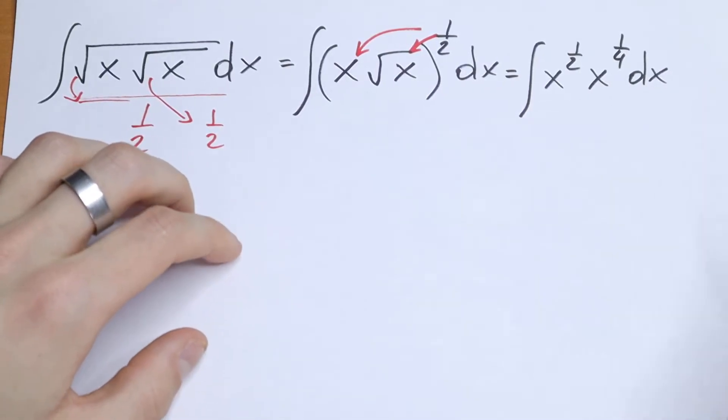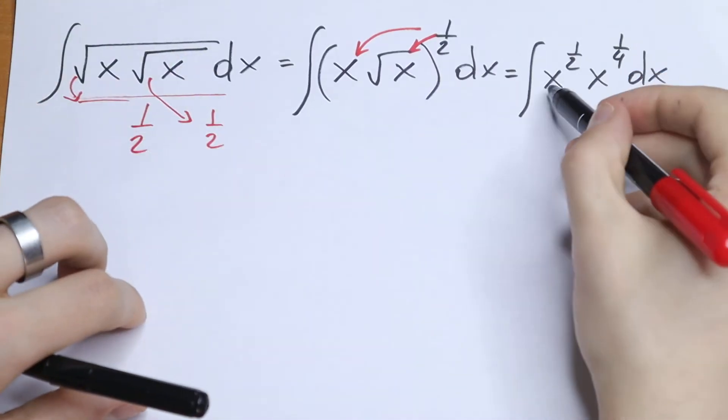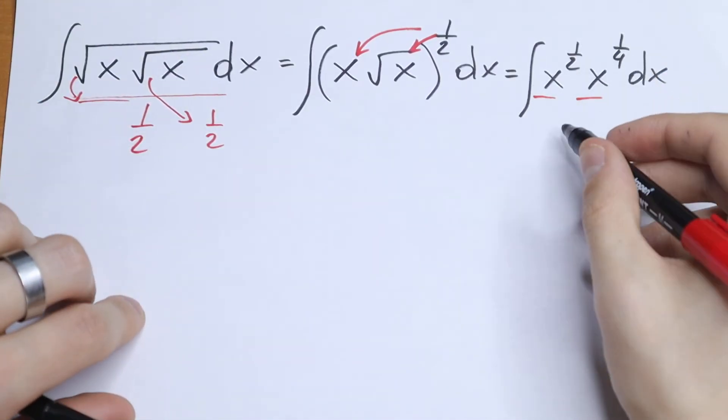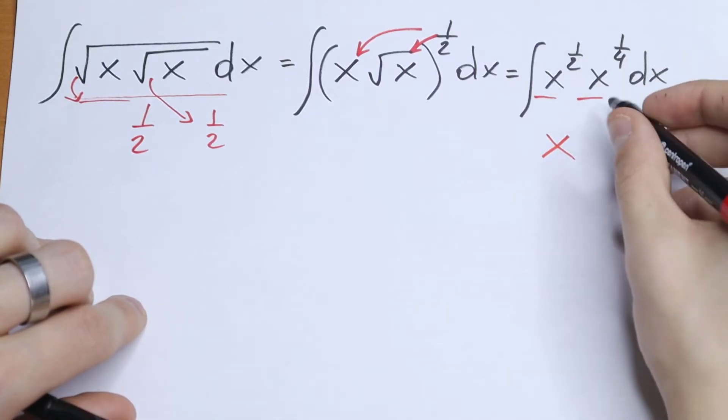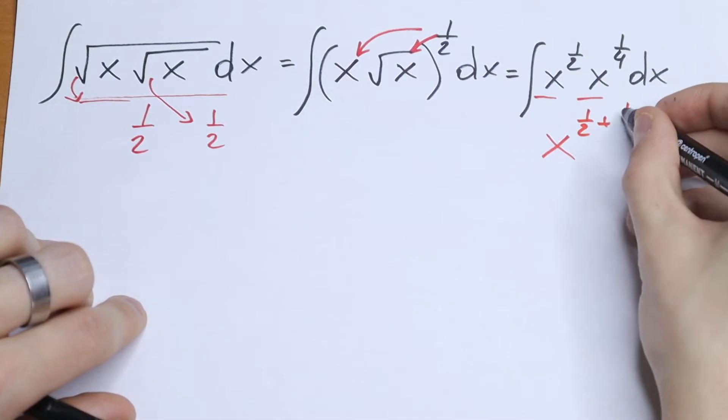And take a look, it's a really good case because we have the same basis, we have a product. So if we want to write it in one base, we need to add these powers 1 half plus 1 fourth.